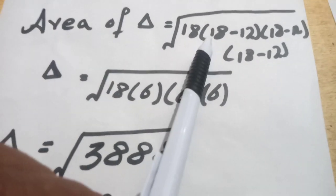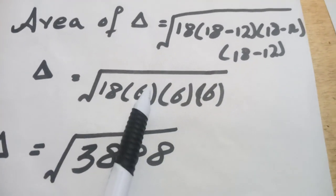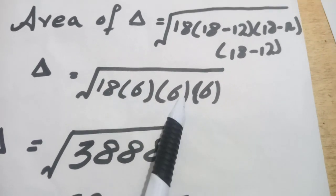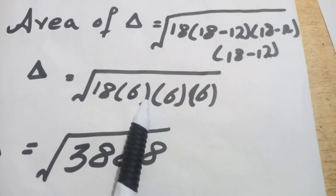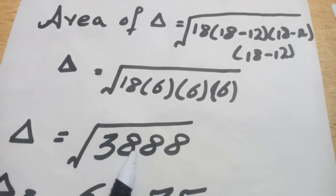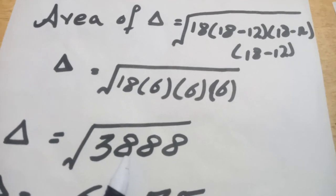Then area of triangle: 18 into 18 minus 12 is equal to 6 into 6 into 6. This gives us under the root 3888.